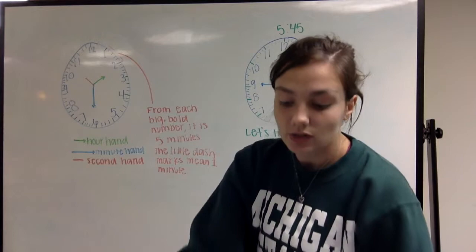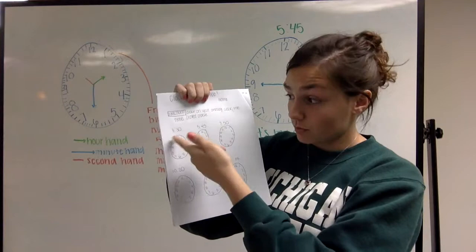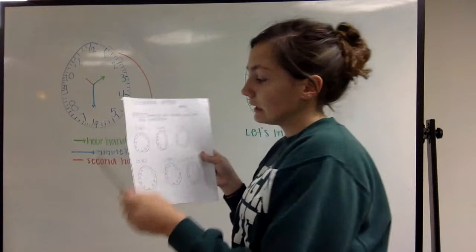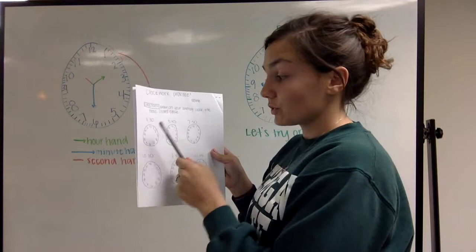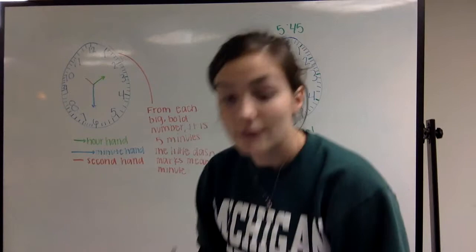Now take out your worksheet that I handed you guys today that says clockwork practice. You have six clocks to time. So look at the top and the first one says 3:30. So you find where the 3:30 would be on the clock. So we'll do the first one together. So the hour hand is three. So you would count to three. One, two, three. So you would draw a line, a small line for the hour.